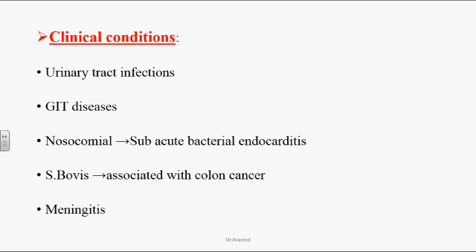Nosocomial infections occur in hospitalized patients where surgical procedures or IV/urinary catheters are the main predisposing factors. These lead primarily to subacute bacterial endocarditis, which progresses at a slow pace. Early symptoms include low-grade fever, anemia, splinter hemorrhages, skin nodules, Janeway lesions, and Osler's nodes.